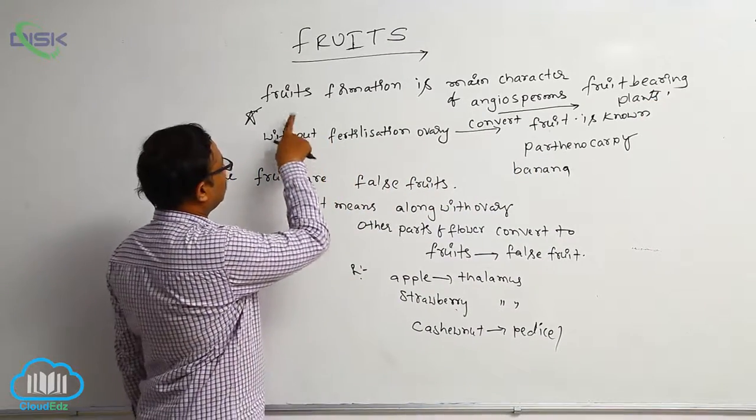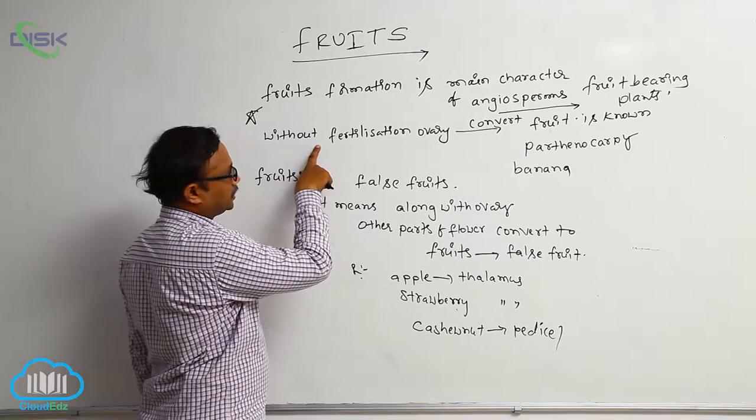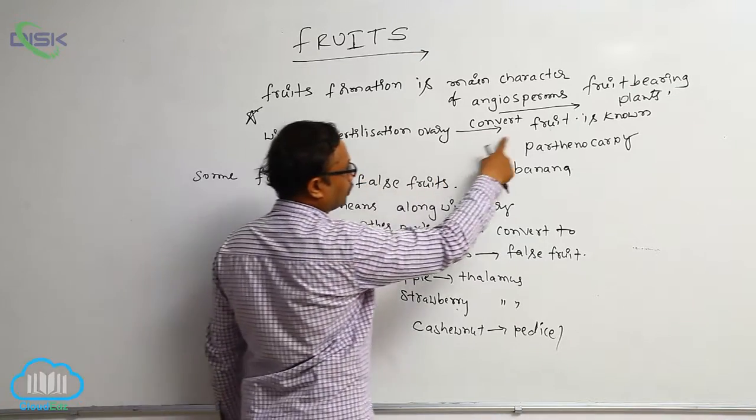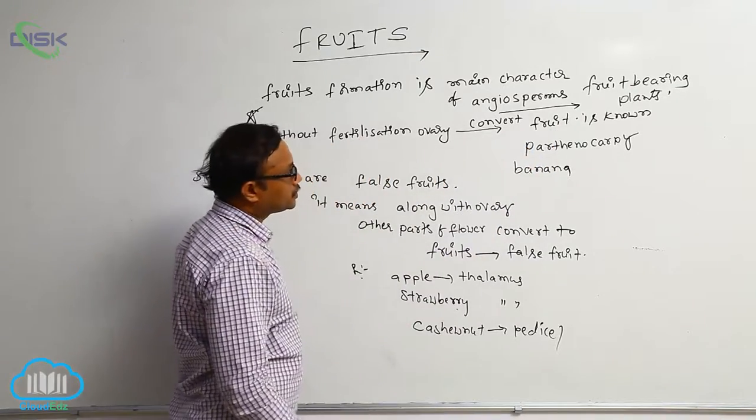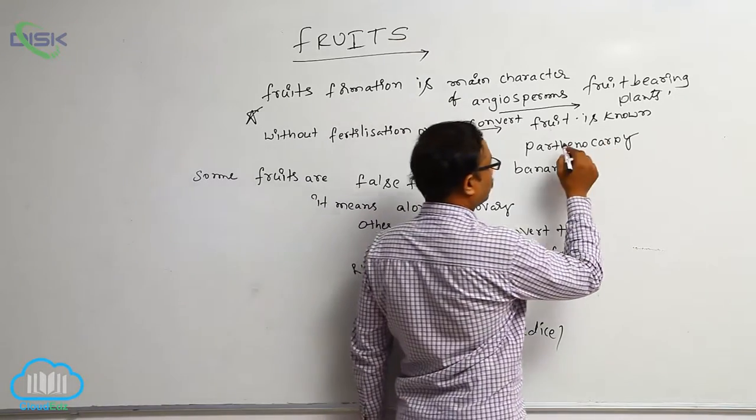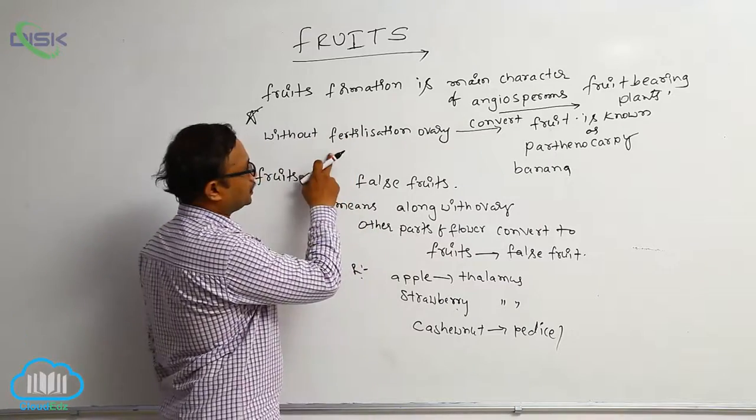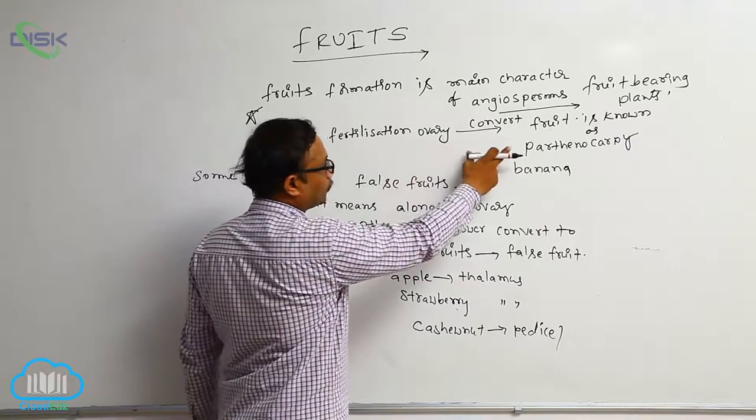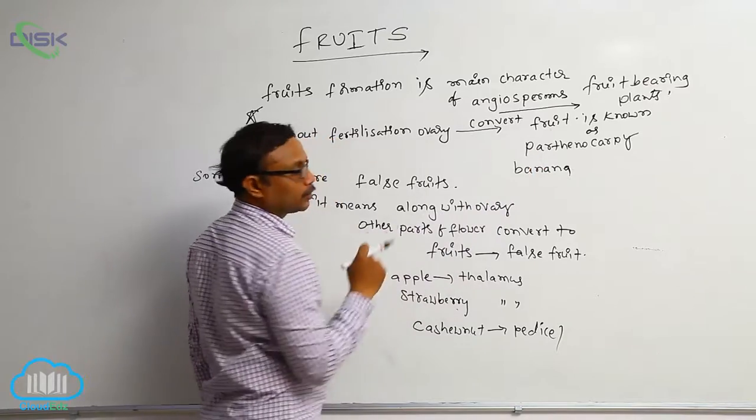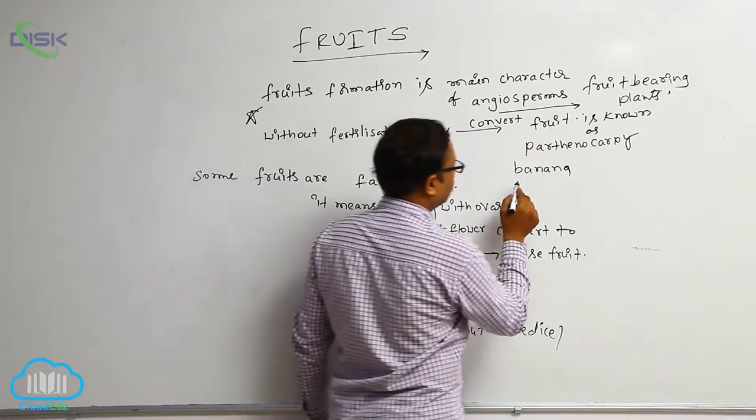Without fertilization, sometimes ovary converts into fruit. This is known as parthenocarpy. Parthenocarpy means without fertilization, ovary converts into fruit. Example: banana.